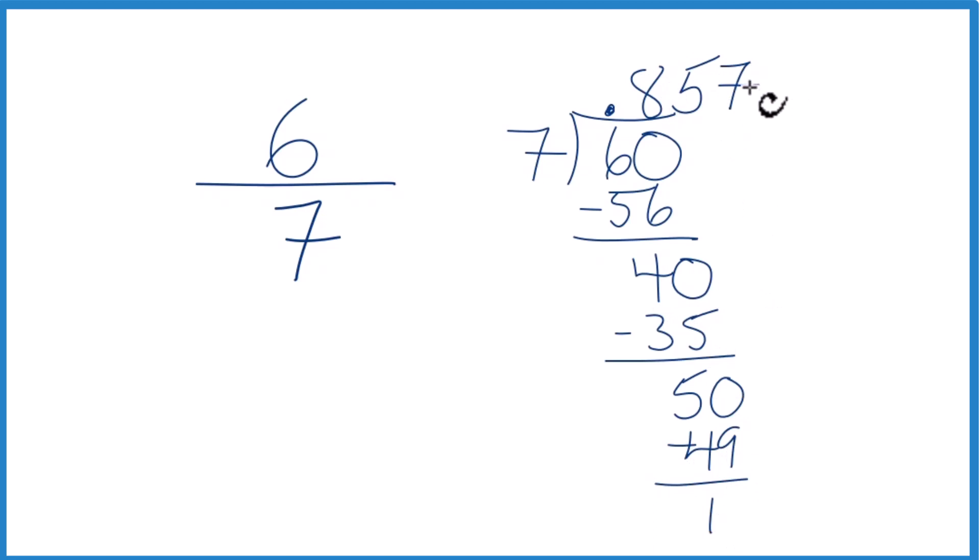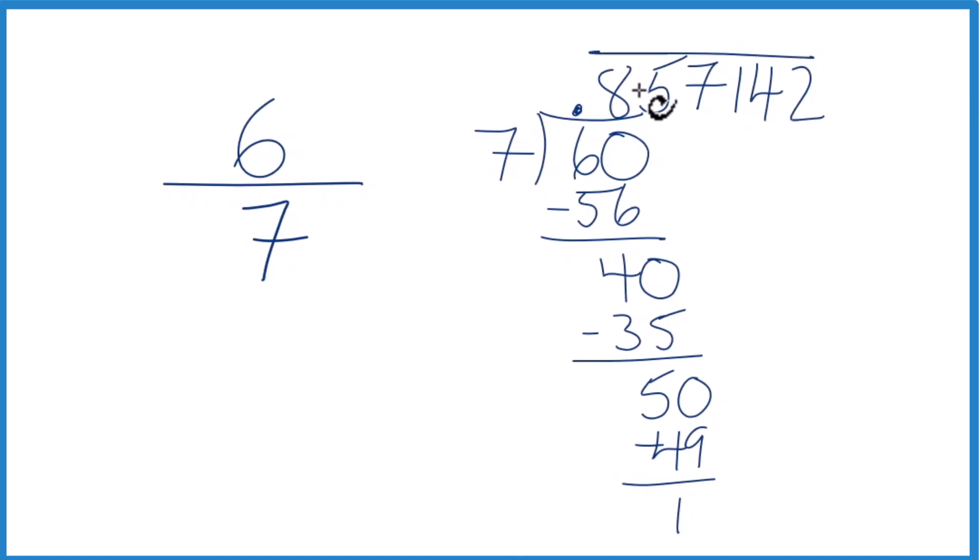Actually, what happens is that it goes out to 857142, and then it actually repeats from there. So we're just going to put a bar over here to show that this is repeating.